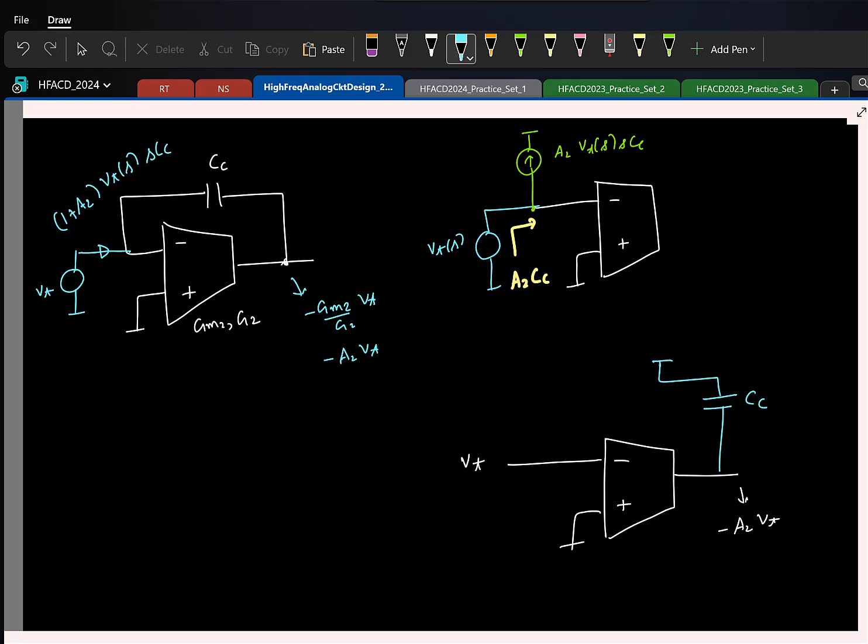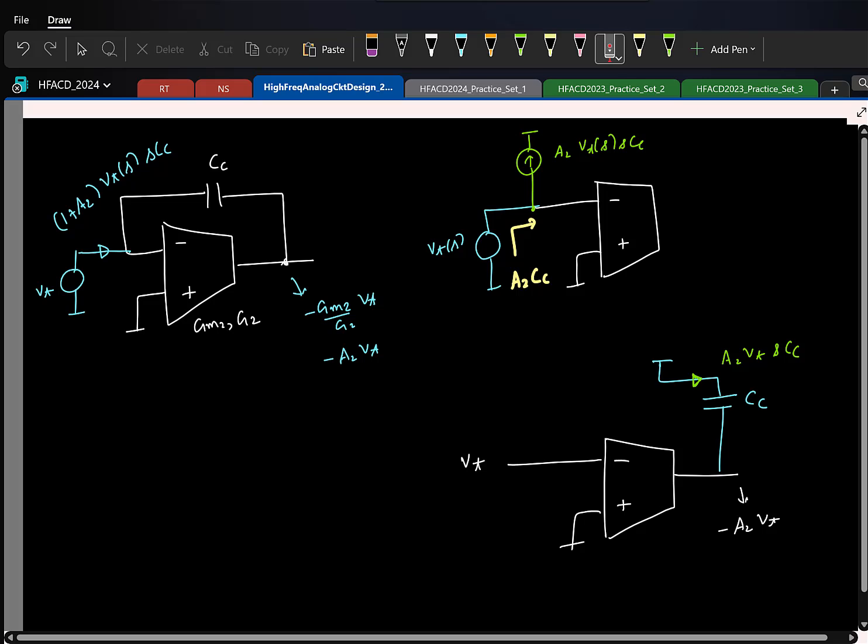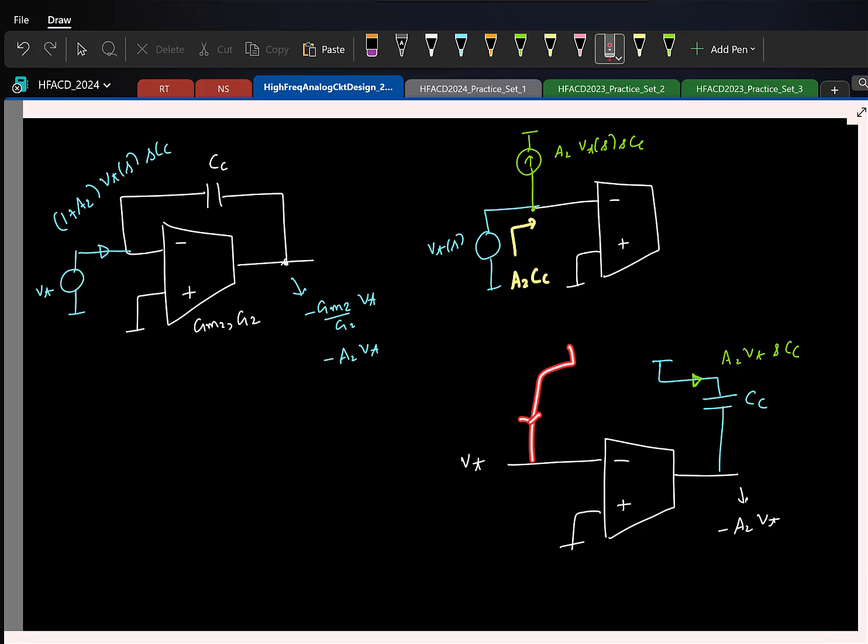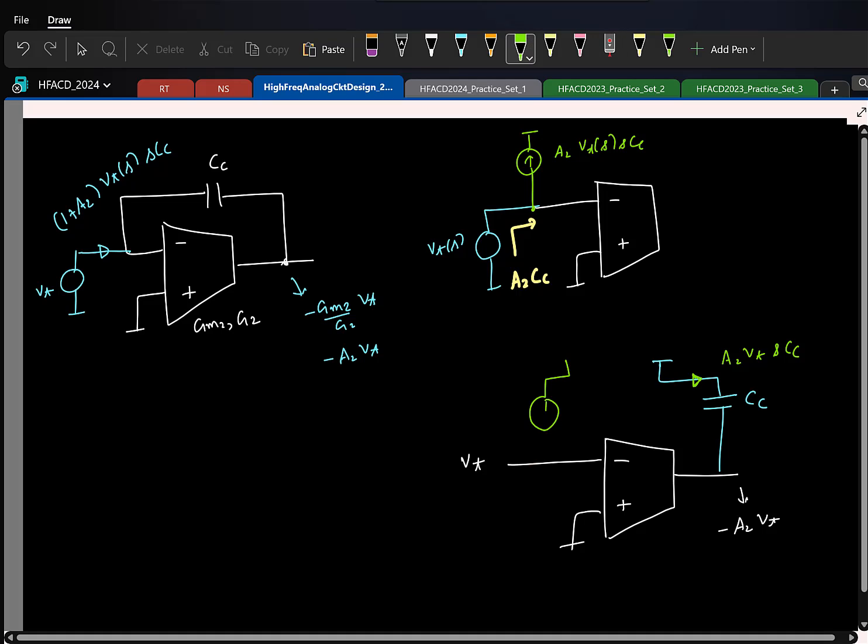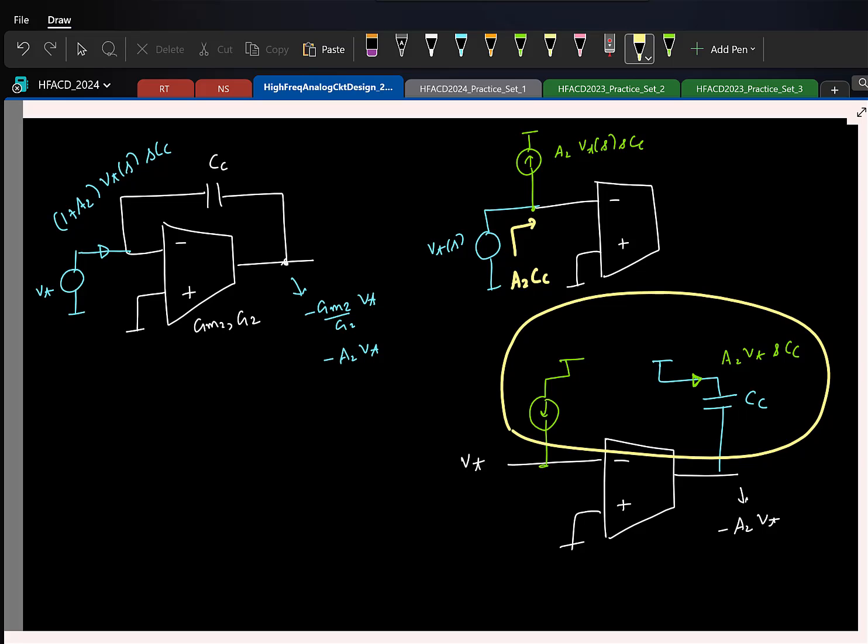Now, my job is to somehow sense this current here. If I put a capacitor here. Okay. Now, what is the current flowing in this direction? 0 minus of minus A2V test that is A2V test times Scc. Now, my job is to somehow sense this current here and push in the same current here.